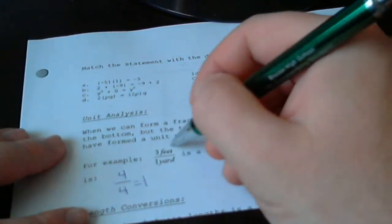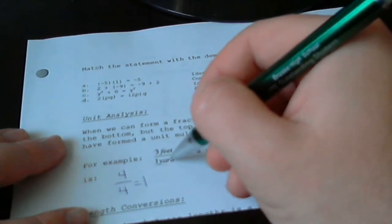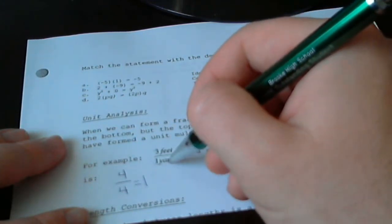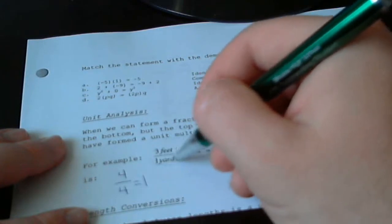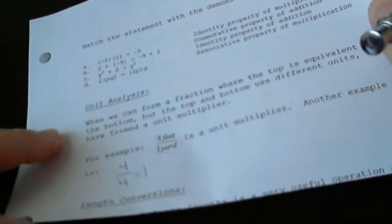That's essentially what 3 feet over 1 yard is. This is the same amount of distance over the same amount of distance, just in different units. And they're going to help us convert different lengths.